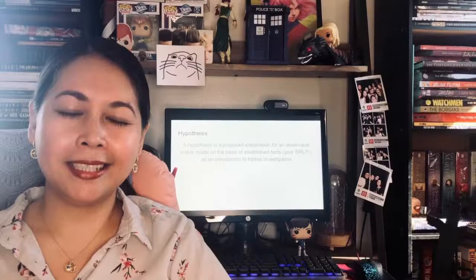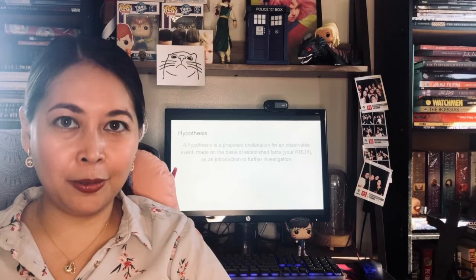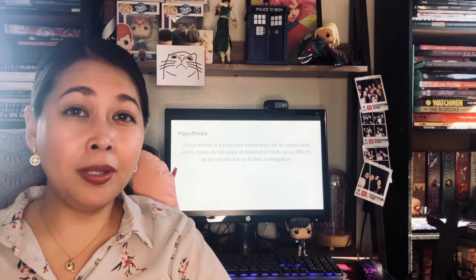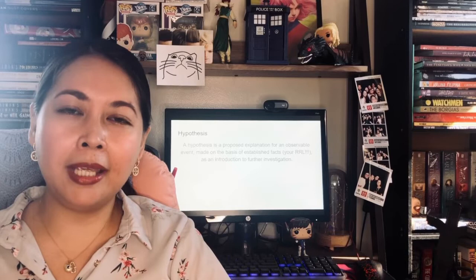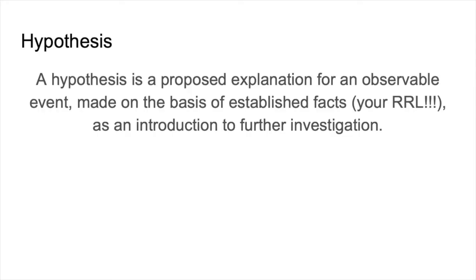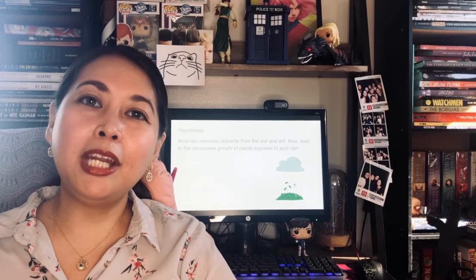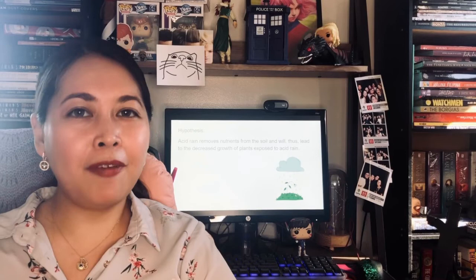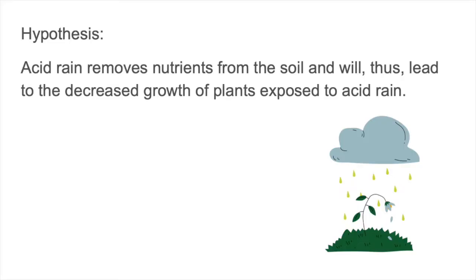At the risk of redundancy, I've featured the hypothesis in many of my videos, because it is of primary importance. If your hypothesis is not good and clearly established, then even if your experiment is properly executed, it would be of little value. Think of your hypothesis as the compass that sets the direction of your research. In our previous video on the introduction, we referenced our paper on the effect of acid rain on the growth of mung bean plants. It states that acid rain removes nutrients from the soil and will thus lead to the decreased growth of plants exposed to acid rain. This hypothesis will be the one tested in the experiment that I will be describing.